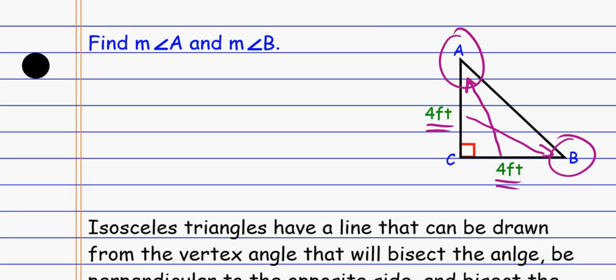and since those side measurements are the same, the angles across from those sides have to be the same. So now I know that A and B have to have the same measurement.